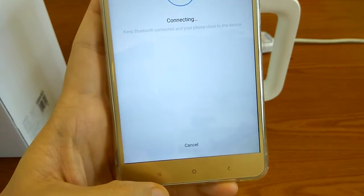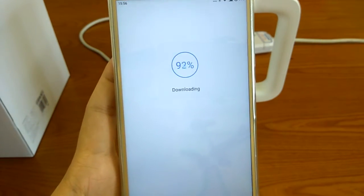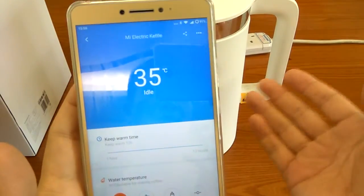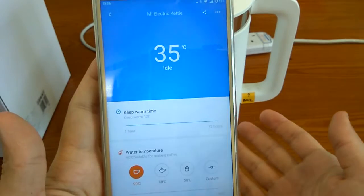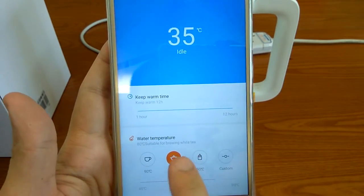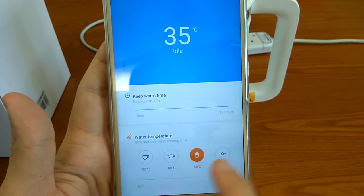Then it will show 'connect'. Once it's connected, it will show you the temperature inside the kettle. Then you can actually set the temperature to keep the water warm at whatever level you want, or custom, or ninety, or whatever.